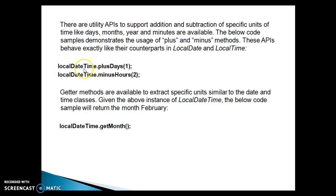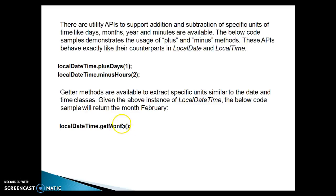If you have an object of LocalDateTime, then you can call plusDays() to add a number of days to the current timestamp. And if you already have a LocalDateTime object, you can also subtract a number of hours. Getter methods are available to extract specific units, similar to the date and time classes. Given an instance of LocalDateTime, you can call getMonth() or other getter methods to retrieve the month, day, or year. There are a lot of getter methods available, and you can even subtract year from LocalDateTime.